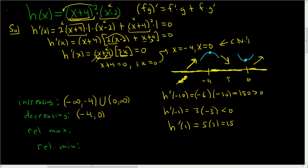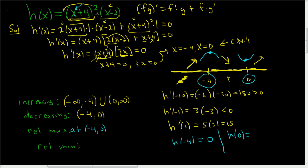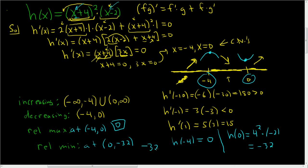To find the actual maximum and minimum values, we plug back into the original function. h(−4) = (−4 + 4)² times (−4 − 2) = 0, so we have a relative max at (−4, 0). Then h(0) = (0 + 4)² times (0 − 2) = 16 times −2 = −32, so we have a relative min at (0, −32). You can also just write 0 and −32 as the max and min values respectively.